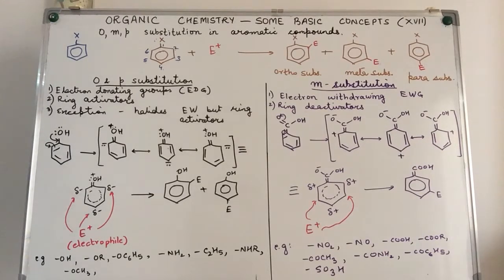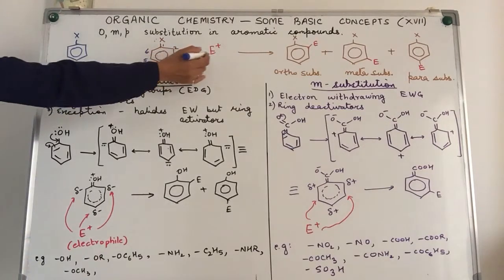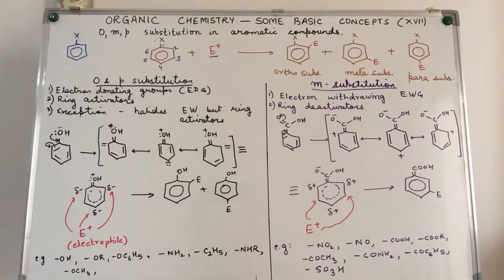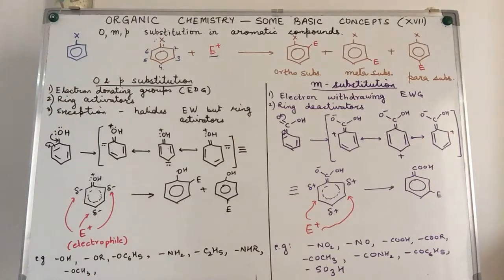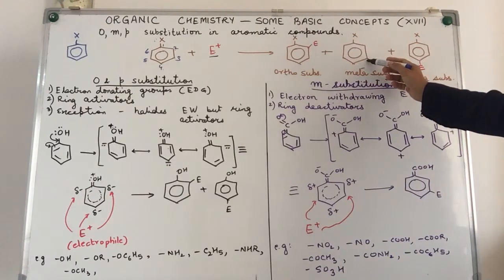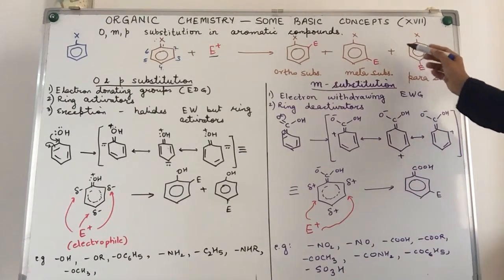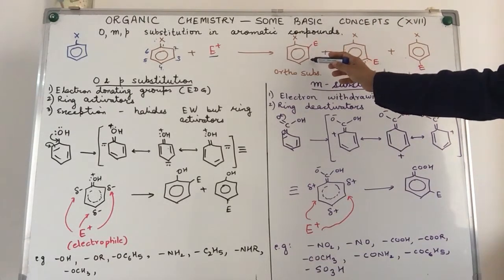This group, that is the group which is already present on the benzene ring, also decides where or at what position the second group entering into the benzene ring will become attached. So this is our new entrant E positive. You know that aromatic compounds undergo electrophilic substitution reactions. With respect to the group which is already present on the benzene ring, the electrophile E positive can either enter into the second position, third position or fourth position.